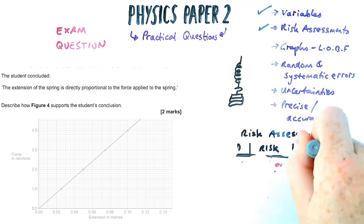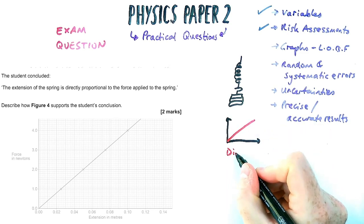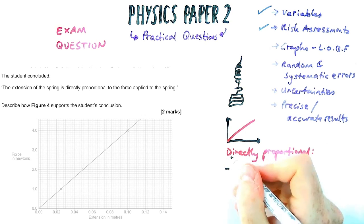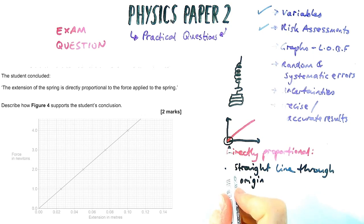Now in this practical as well, we're going to talk about the graph briefly, and there's a part two to this question. It says describe how the graph supports the student's conclusion that the two things are directly proportional, and it's two marks, so we've got to say two things. The first one is to say the graph is a straight line, and it goes through the origin. The origin is the 0,0 point down the bottom left.